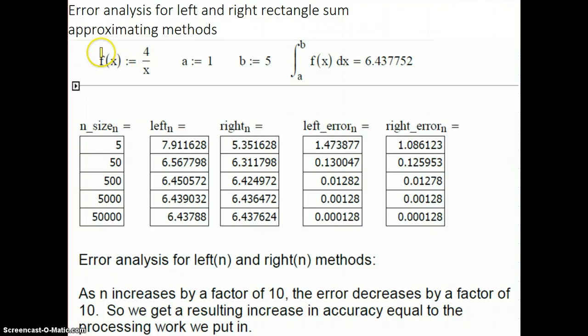So we use this function that we've seen before, 4 over x, we're going to integrate it from 1 to 5. The answer that we get when you integrate is this answer here, 6.437752, and that's rounded off.